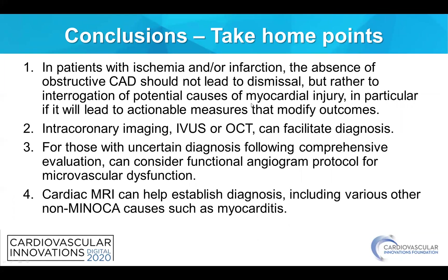Take-home points: Number one, in patients with ischemia and myocardial infarction, the absence of obstructive coronary disease should not lead to dismissal, but rather to interrogation of potential causes, particularly if it leads to actionable measures that modify outcomes. Two, intracoronary imaging using IVUS or OCT can facilitate diagnosis. Three, for those with uncertain diagnosis following comprehensive evaluation, there can be selective consideration for a functional angiogram protocol for microvascular dysfunction. And last, we must not forget the role of advanced imaging — particularly cardiac MRI — to establish other diagnoses, including small infarcts or non-MINOCA causes such as myocarditis. Thank you very much.